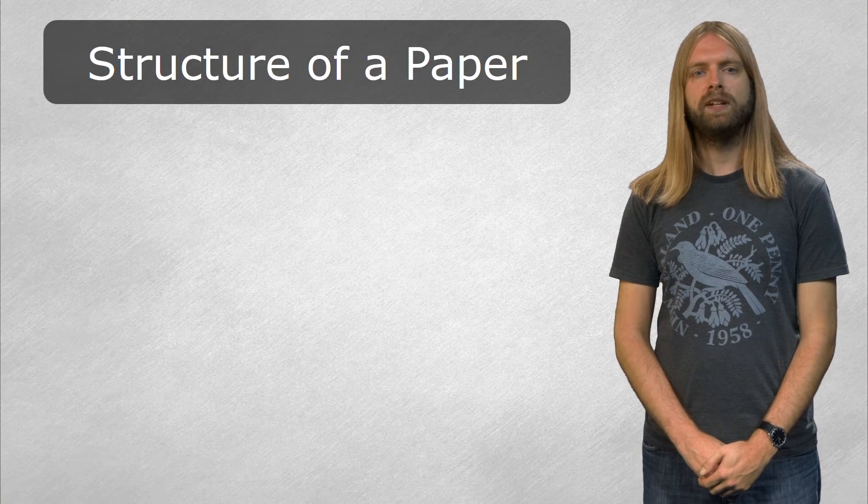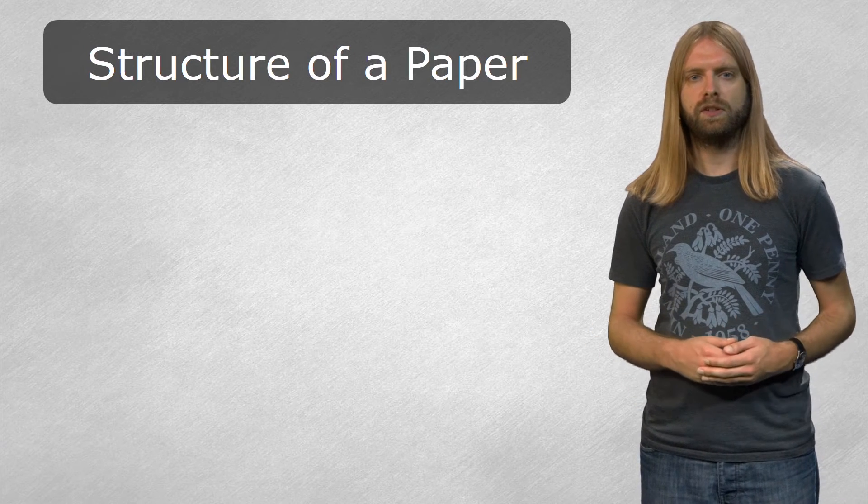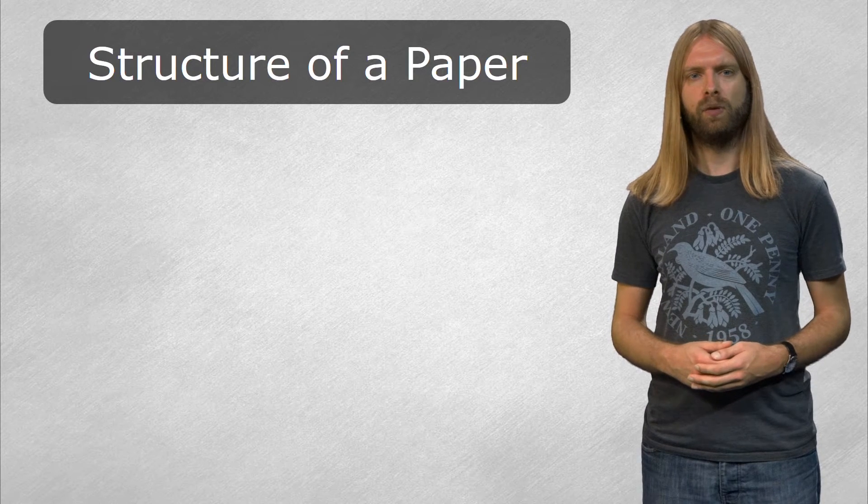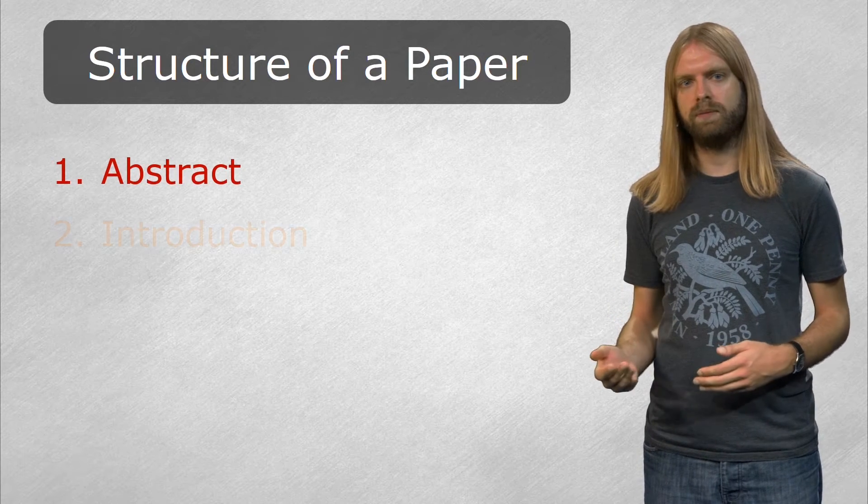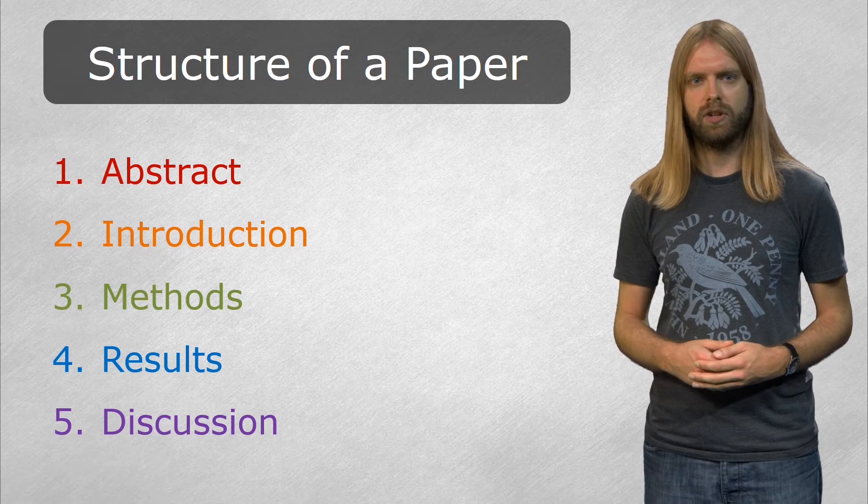Scientific papers are made easier to read by all following a similar structure. The exact order and titles of sections varies between journals, as does the length of papers, but the basic format is the same: an abstract, an introduction, a methods section, a results section, and a discussion.